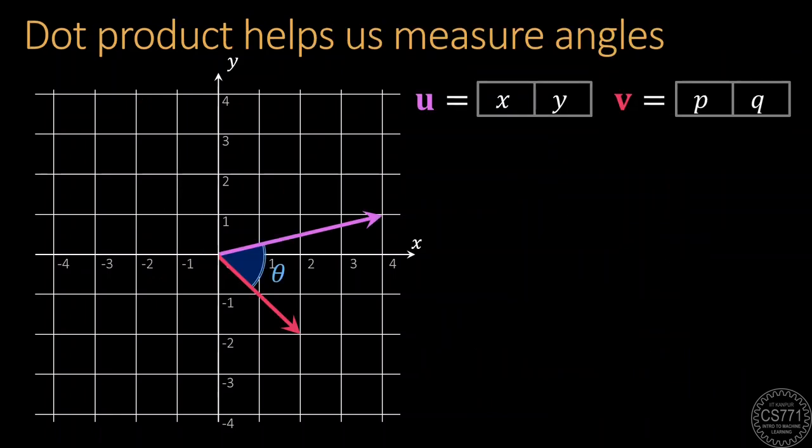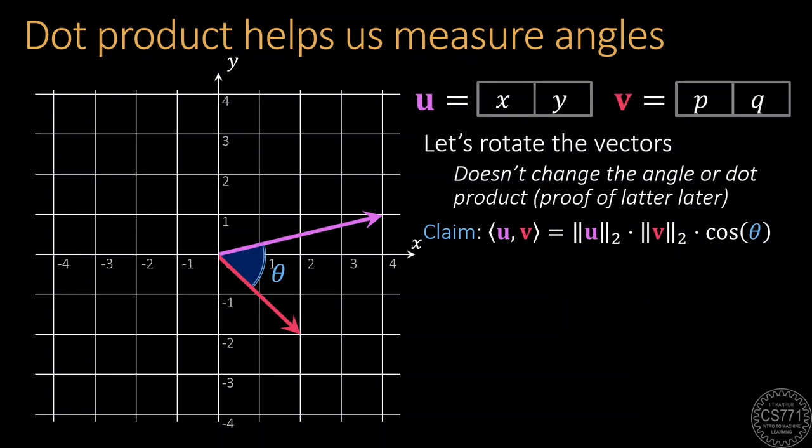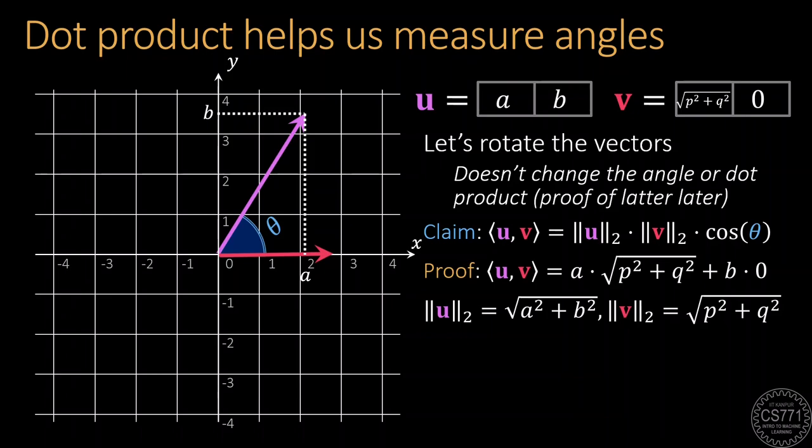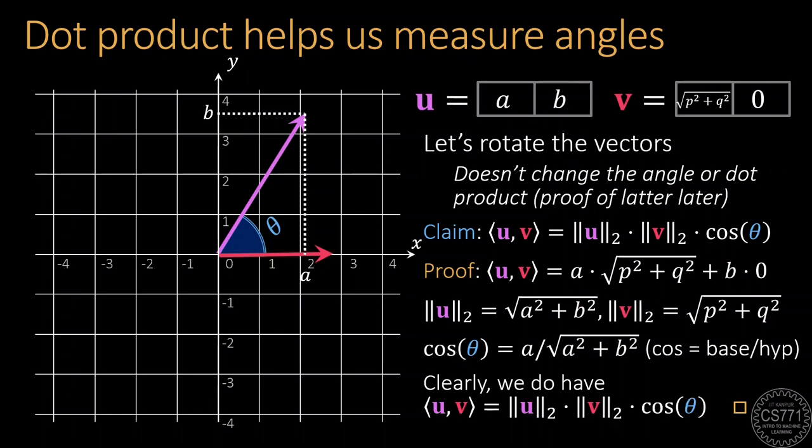Let us start with these two vectors U and V which have coordinates X, Y and P, Q and we will want to prove this claim. It would help us simplify the analysis if we first rotate the vectors so that one of them aligns with the coordinate axis. Let's say in this case, we rotate so that the vector V starts aligning with the coordinate axis. Note that this does not change the angle between the two vectors and you can trust me for now that this doesn't change the dot product between the two vectors either. Now, obviously, the rotation will change the vectors themselves. So, the vector V will have a zero Y coordinate now because it's along the X axis and its X coordinate value will simply be the length of the vector. Similarly, the vector U will have some new coordinates. Let's call them A and B. From here on, we simply calculate the dot product between the two vectors, calculate their lengths, also calculate the cosine of the angle between them by using the old high school trigonometry rule and notice that the claim indeed holds.